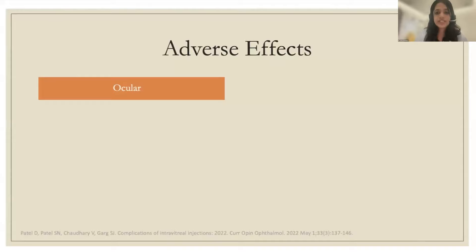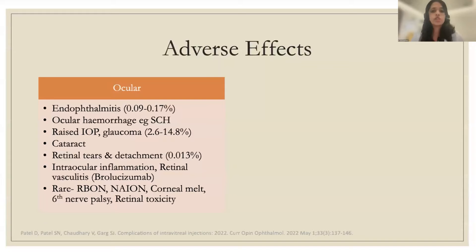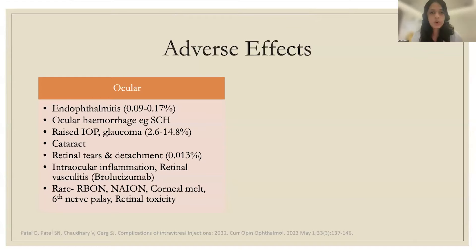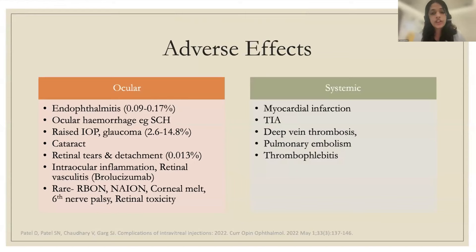Adverse effects of anti-VEGF agents include ocular and systemic complications. Ocular: endophthalmitis is the most important; also subconjunctival hemorrhage, raised intraocular pressure and glaucoma (more common with pre-existing glaucoma), cataract formation (especially if the lens is touched), retinal tears and detachment, intraocular inflammation, and retinal vasculitis (especially with brolucizumab). Rare complications include retrobulbar optic neuritis, NAION, corneal melt, sixth nerve palsy, and retinal toxicities. Systemic side effects include myocardial infarction, transient ischemic attacks, deep vein thrombosis, pulmonary embolism, and thrombophlebitis.